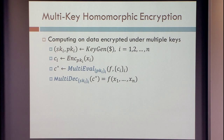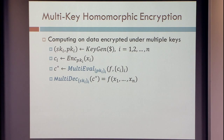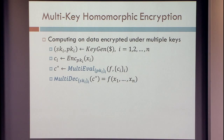What is a multi-key homomorphic encryption? It's an encryption scheme where, instead of having just a single public and secret key, we have many pairs generated independently. We have encryptions under the different keys. Instead of just an eval procedure that takes a public key and a bunch of ciphertexts and computes some circuit, we have a multi-eval function: it takes many public keys and ciphertexts and computes a function on them.